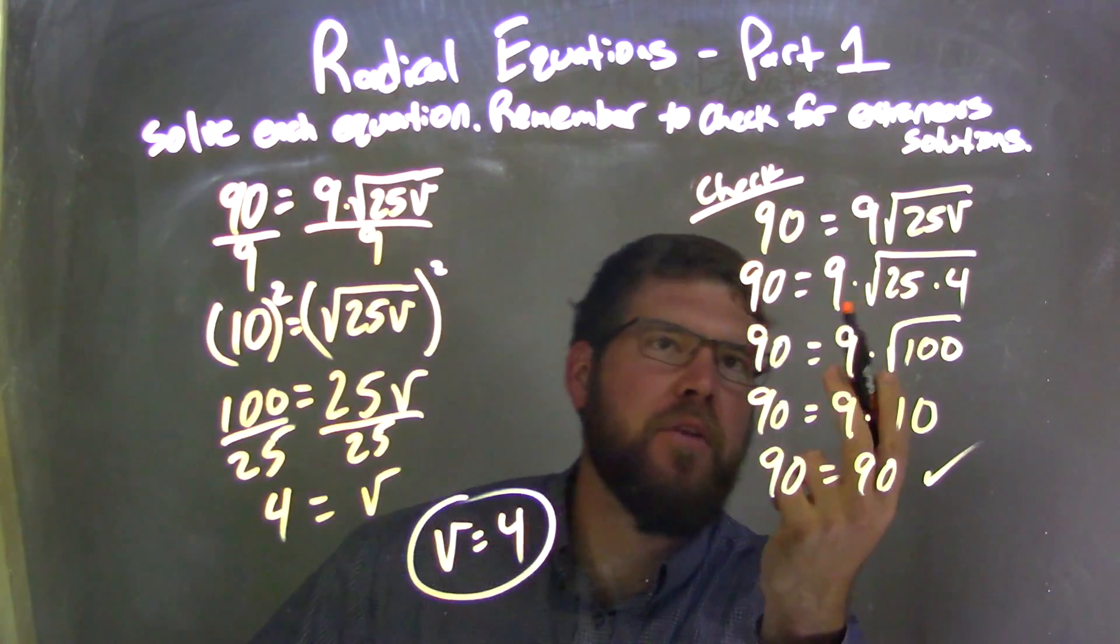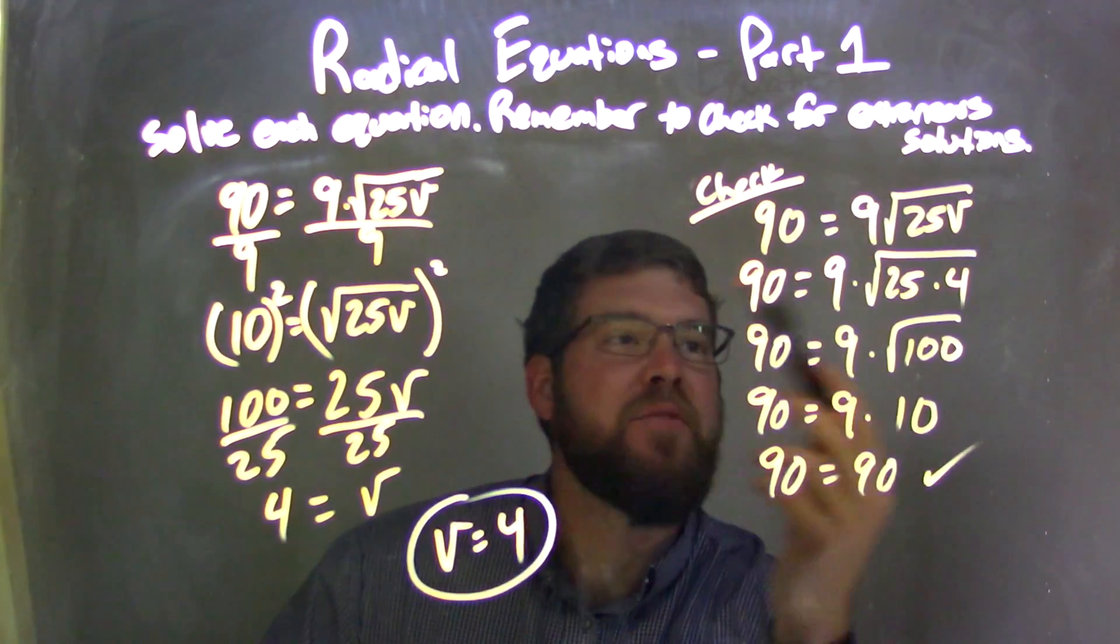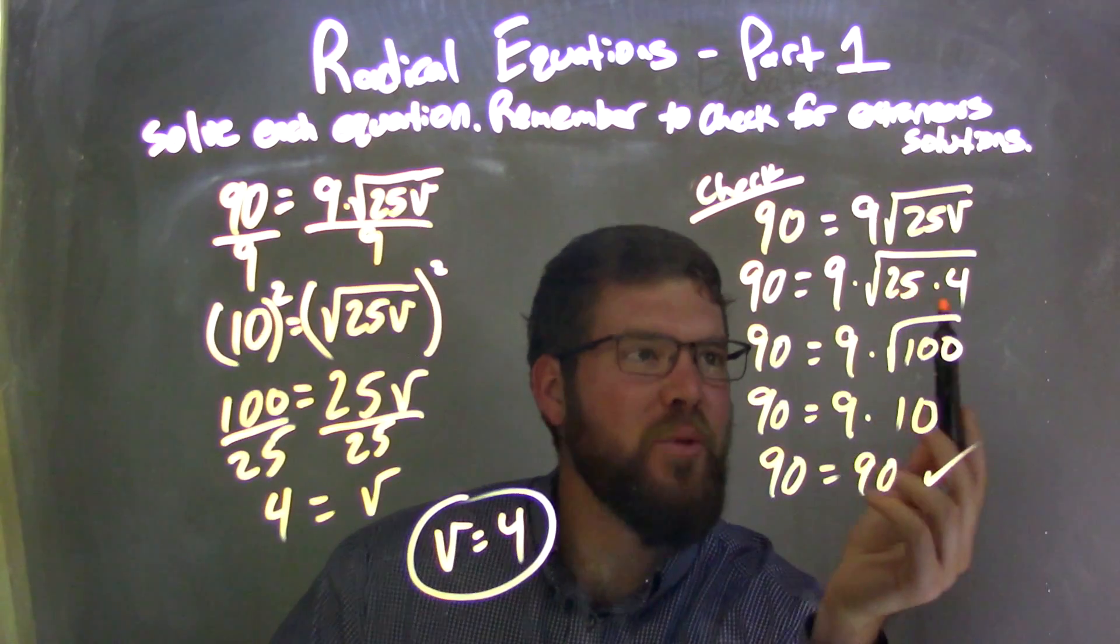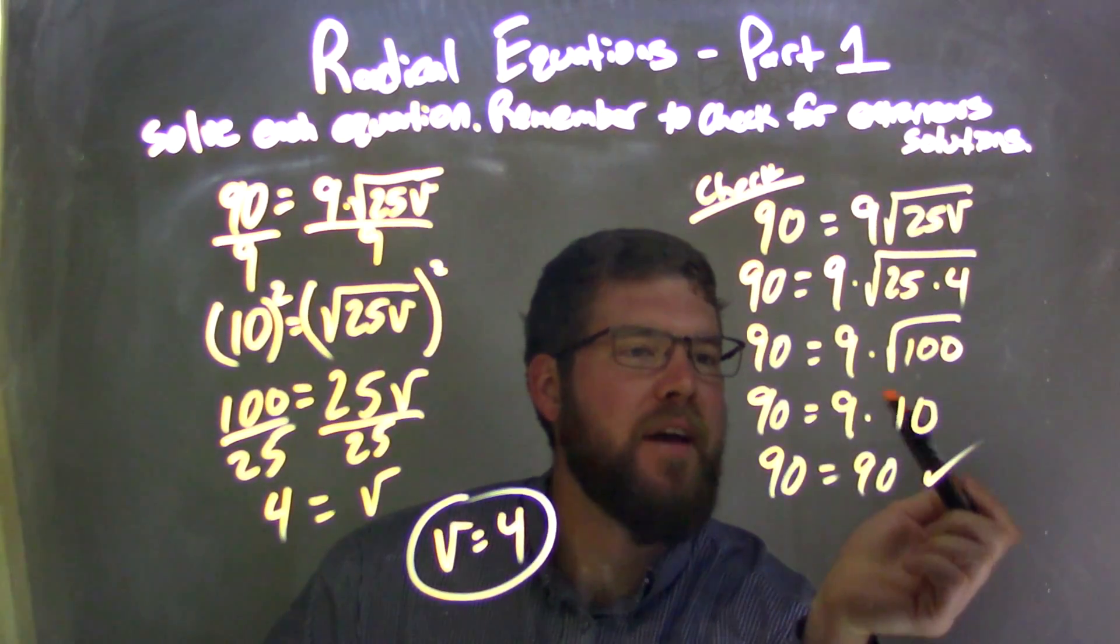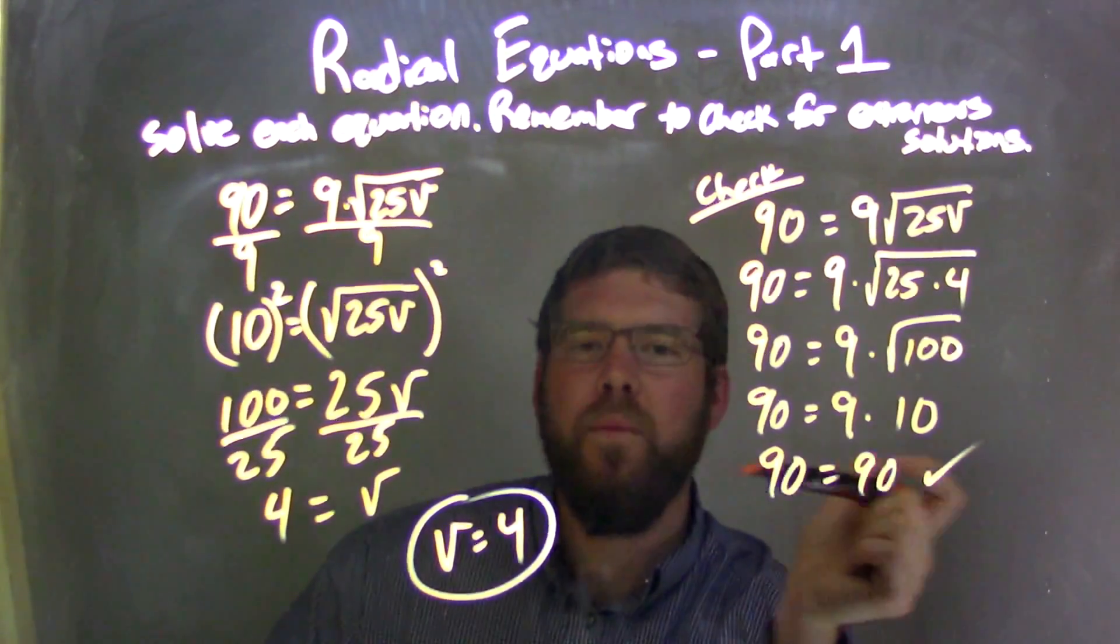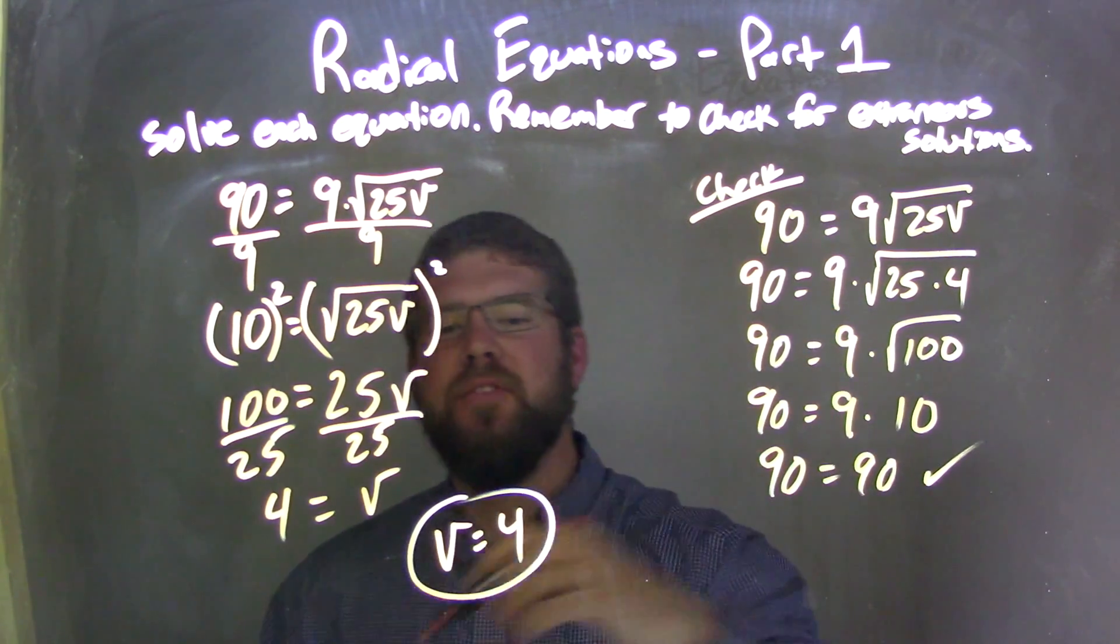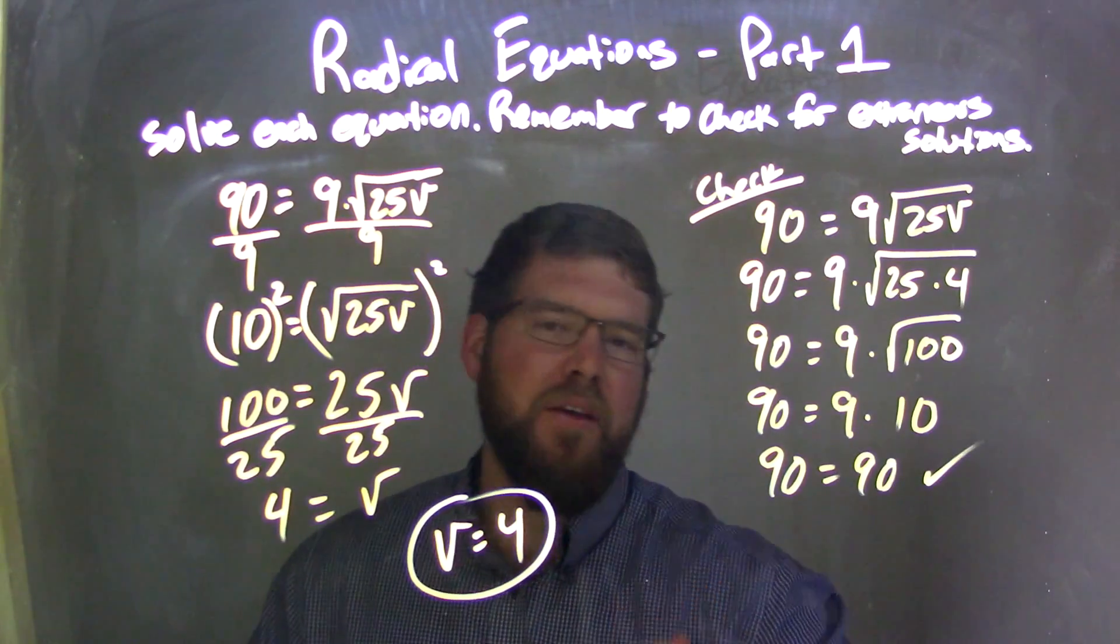Needed to check that. I checked it over here. I rewrote the equation, plugged 4 in for V. 25 times 4 is 100. Square root of 100 is 10. 9 times 10 is 90. Left and right are equal. Fantastic. Check complete. No extraneous solutions. My final answer is V equals 4.